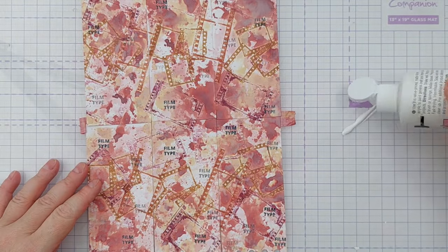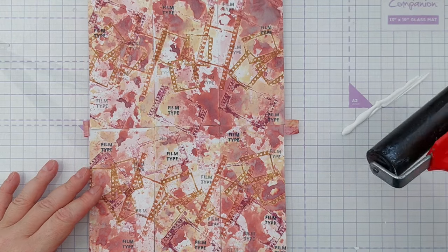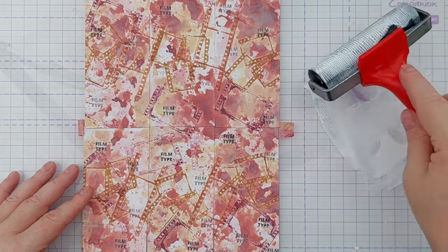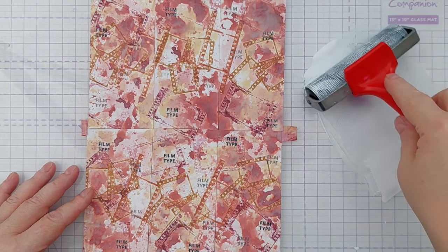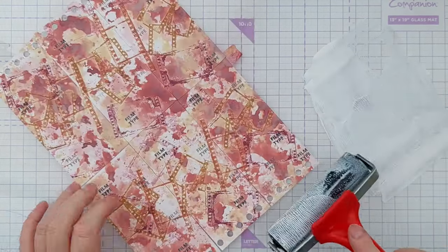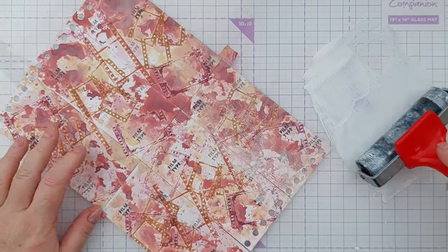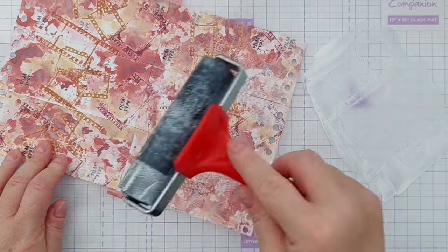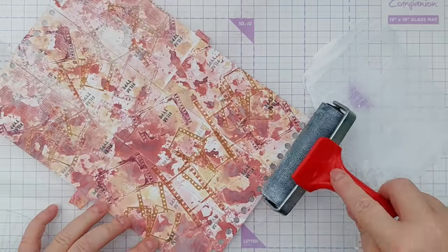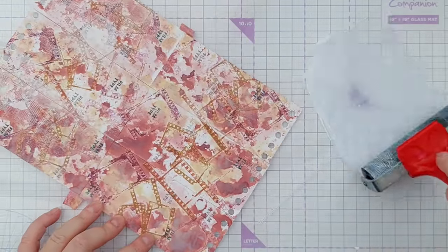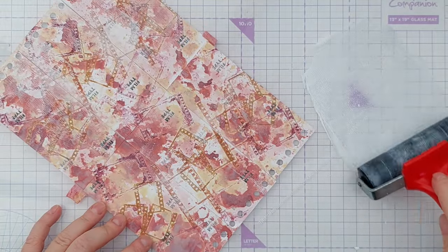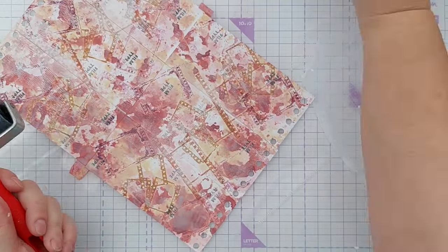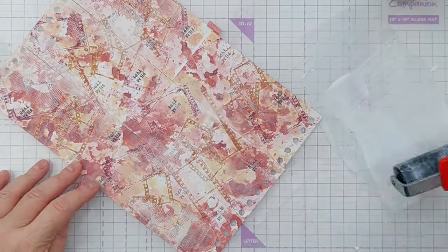And then to marry everything together, I put a bit of white acrylic paint on my glass mat, used my brayer to pick it up, and then brayed on a very thin layer of white paint. And this binds everything together, it pushes everything back into one layer so it all looks like it's meant to be together. You don't have to do this, but it's something I often do because it seems to bring everything together.